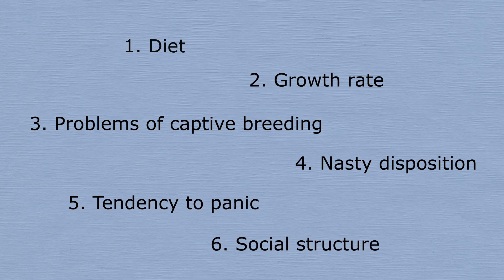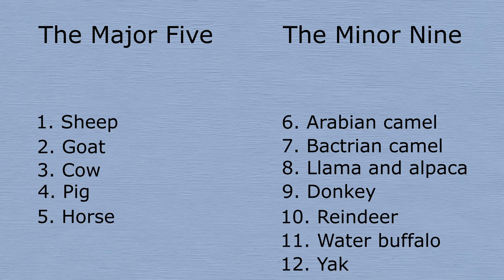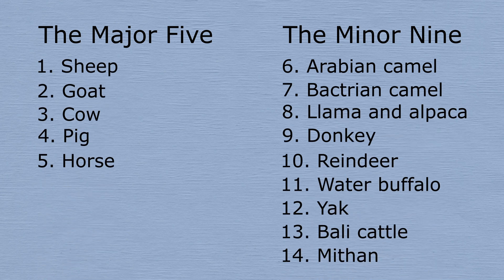So, there are the six reasons why we have never domesticated certain animals. In fact, just looking at large mammals, only 14 out of a possible 148 species were domesticated before the 20th century.